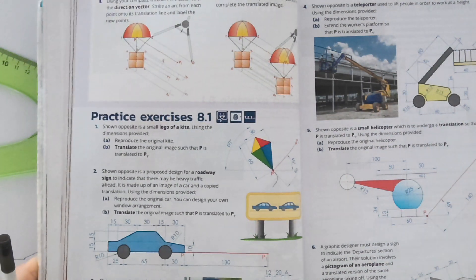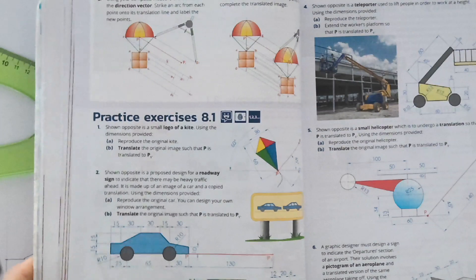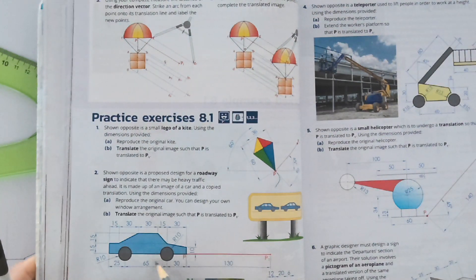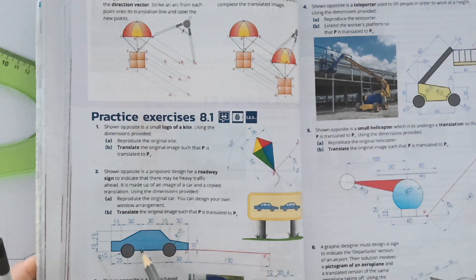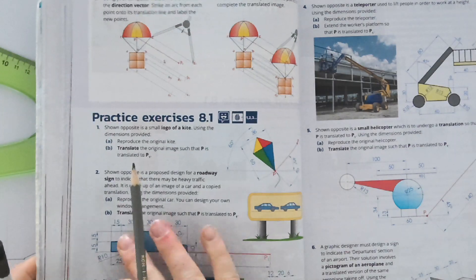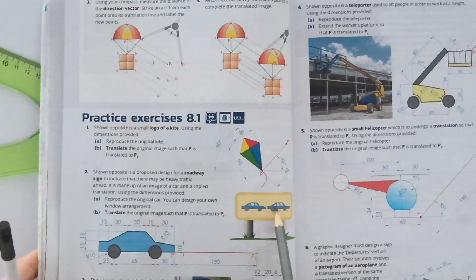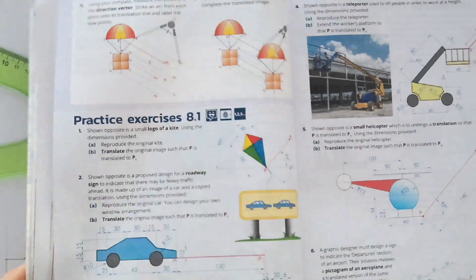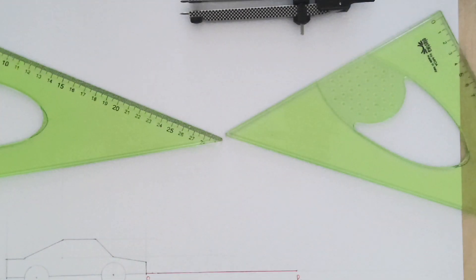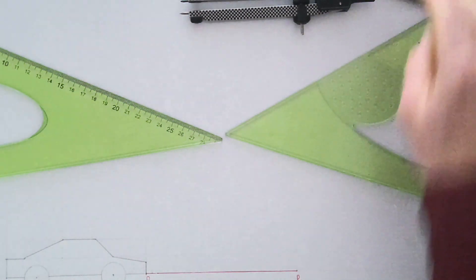This is page 90, question 2. They want us to perform a transformation geometry, a translation of this car from P over to P1. Look, they give you a little picture there on the road signs. Now I have the car drawn already here with P and P1.